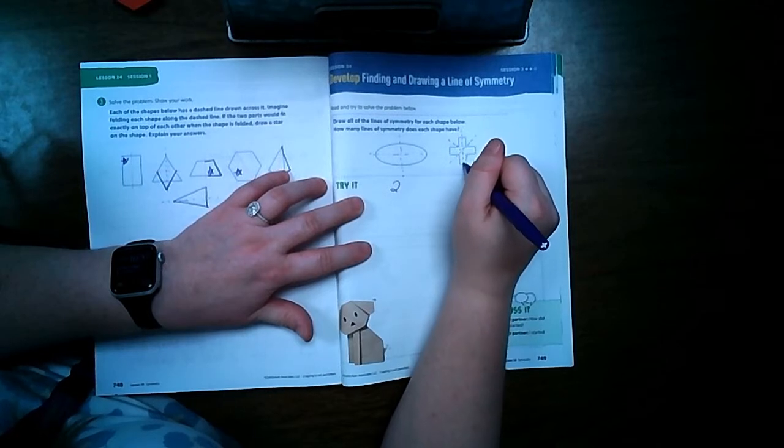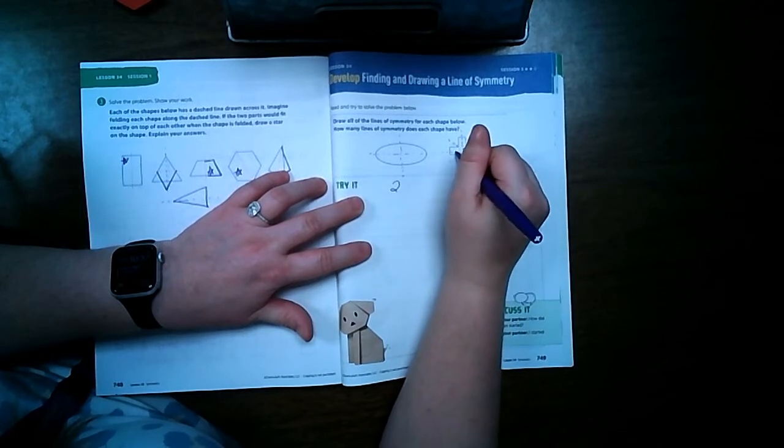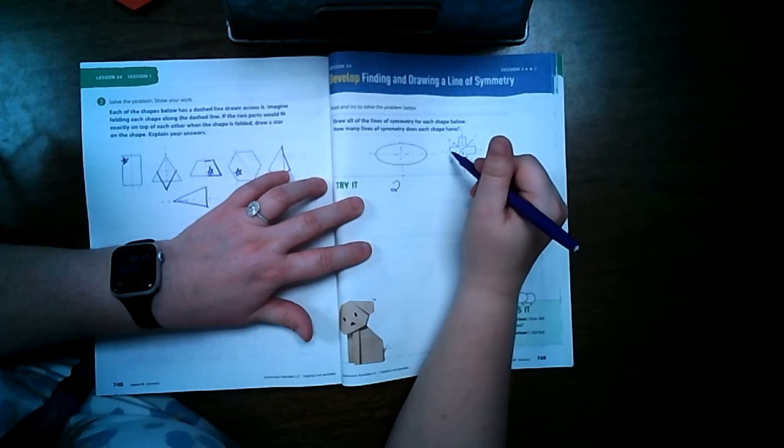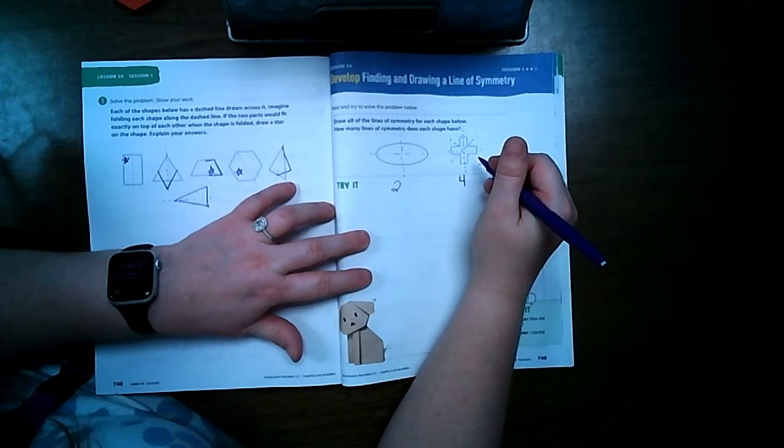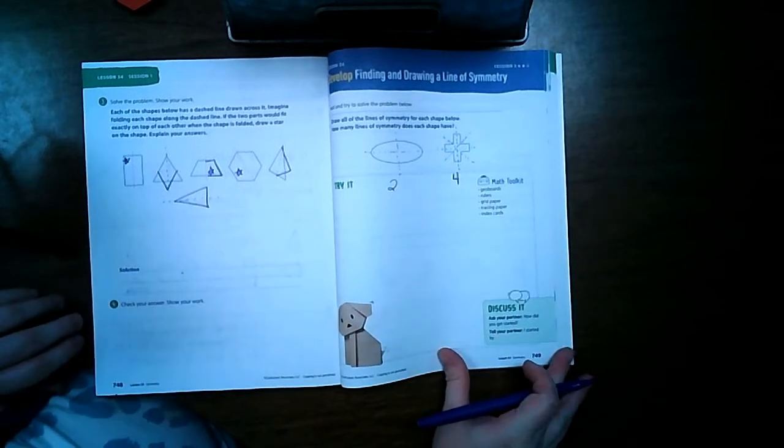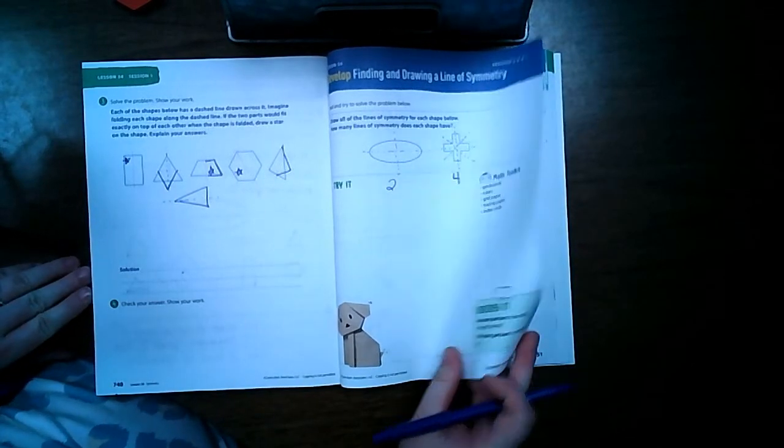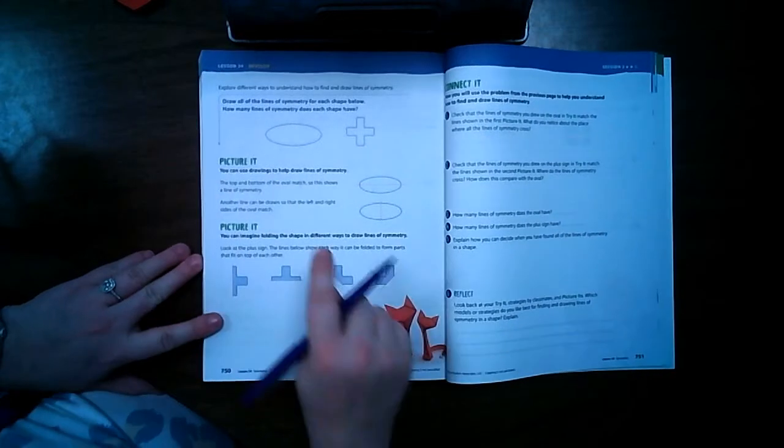Then we can take it down the middle and down the middle going this way, so this one has one, two, three, four lines of symmetry, just like a square. Let's go ahead and turn to page 750.